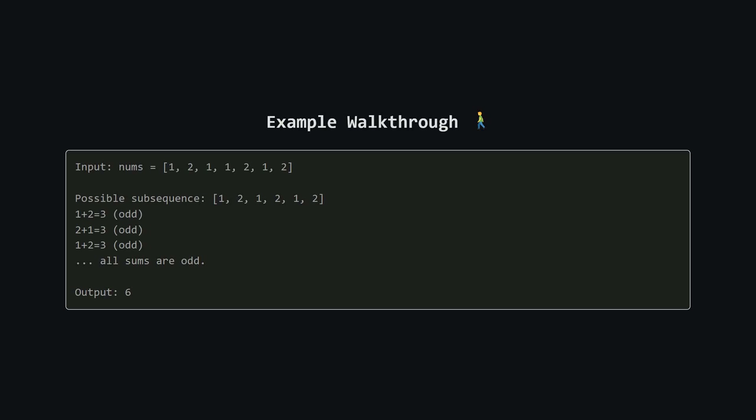Alright, so here's the official problem. The main goal is this: we get a list of numbers, and we need to find the longest possible subsequence that follows a special rule. The rule says that if you take any two neighbors in your subsequence and add them up, their sum must have the same parity — so either all the sums are even, or all the sums are odd. Our job is to find the absolute longest subsequence that satisfies this.